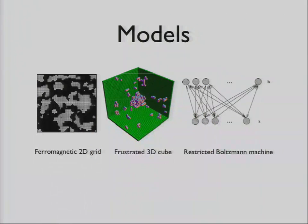He tested this algorithm on three different models. The ferromagnetic 2D grid, a frustrated 3D grid, and a restricted Boltzmann machine that's trained on natural image patches. Essentially what he had to do was manually tune the parameters to each of these things, and it took a long time. And it really affected how well the algorithm did.